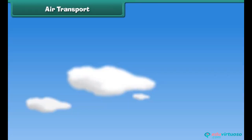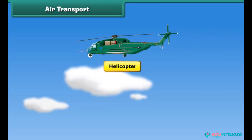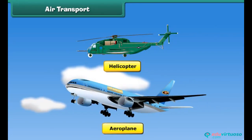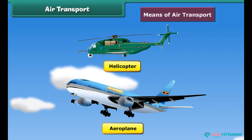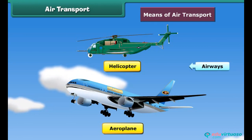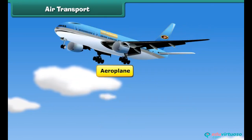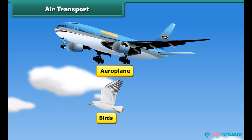You might have seen helicopters and airplanes in the sky. These are means of air transport. These run through airways. These vehicles have wings like birds that help them to fly in air.